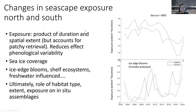What we can see is the declines in pack ice in both the north and the south. If we combine all of these ice edge bloom seascapes — which include polynyas — we're starting to see some increases in the exposure of these systems to ice edge blooms. These are highly productive ice edge blooms, and we're seeing this increase primarily in our more northerly regions. Ultimately, our goal is to look at the role of these habitat types, extent, and exposure on the in situ assemblages — not just in ice edge blooms, but also in shelf ecosystems and freshwater-influenced seascapes.